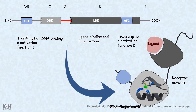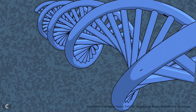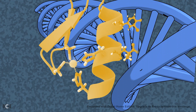For more about zinc finger motifs and other DNA binding domains, the link is given at the end screen. The zinc finger motif present in the DNA binding domain binds to the major groove of the DNA. Alpha helices projecting out from the zinc finger domain interact with the bases in the major groove, determining the sequence-specific binding to a region known as the hormone response element.